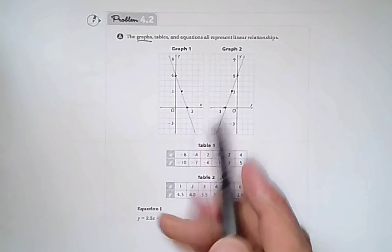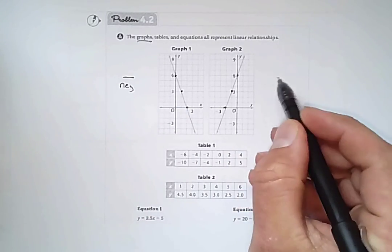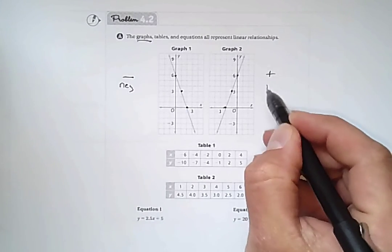Here we see it going down, so we definitely know that this side is going to be negative. And here this is going up, so we know that this side is going to be positive.